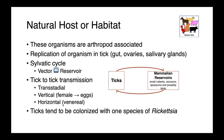These organisms are arthropod-associated. They replicate within the tick — whether that's in the guts, ovaries, or salivary glands — and they have a sylvatic cycle: a cycling of the pathogen between its vector and some reservoir species, such as a tick and a small rodent or raccoon. We also see transmission between ticks, which can be trans-stadial as the tick molts through life stages, as well as vertical transmission from the female to the eggs and horizontal or venereal transmission between ticks.